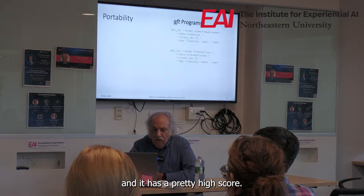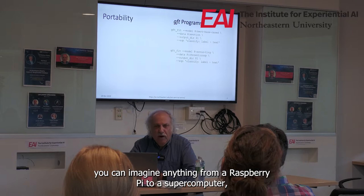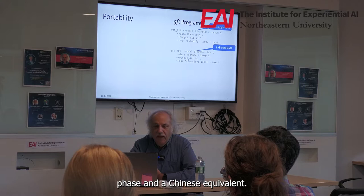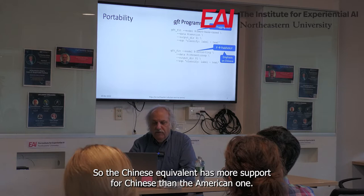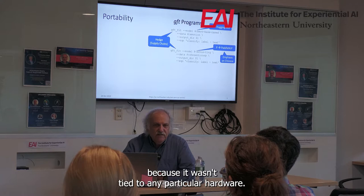I want to emphasize portability. In Unix, all these little languages ran on every piece of hardware you could imagine — anything from a Raspberry Pi to a supercomputer, pretty much the same thing. Here I want to support both Hugging Face and a Chinese equivalent. The Chinese equivalent has more support for Chinese than the American one. But I think it's important to hedge across supply chains. Unix survived the test of time because it wasn't tied to any particular hardware. That's very important.